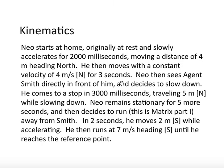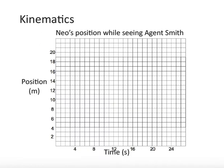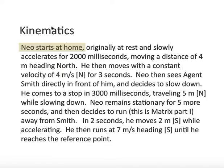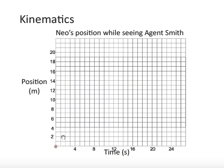So, for starters, here's the graph I'd like you to set up. Make sure it goes all the way up to 20 meters. Actually, you'll need a bit more than 20 meters, probably 21 to be exact. And here's the frame of time I want you to set up. So, position versus time graph. Here's the title. Neo's position while seeing Agent Smith. Alright, Neo starts at home. So, we put a dot at 0, 0. We'll assume his home is position 0.